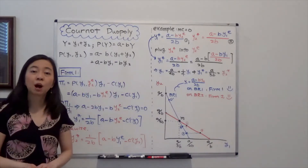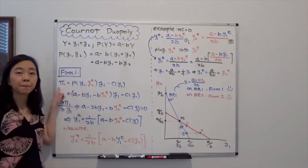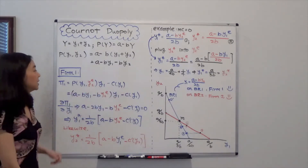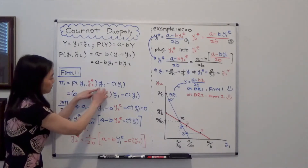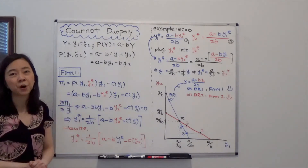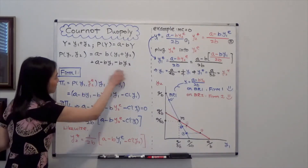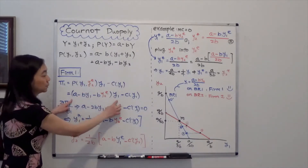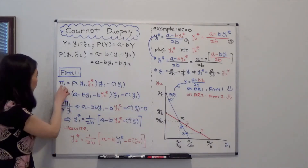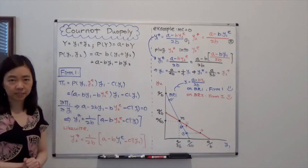Now we're going to solve for the profit maximization problem for firm 1. Firm 1's profit PI(Y1) is equal to total revenue minus total cost. Total revenue is equal to price times quantity of firm 1. Note that Varian uses Y2E to stand for the expected quantity of firm 2. We plug the inverse demand function in and multiply it out to get profit, then take the partial derivative of PI1 with respect to Y1 and set it equal to 0 to maximize profit.